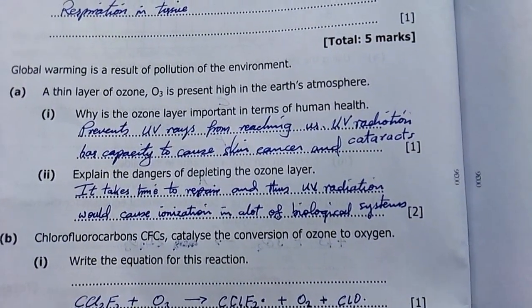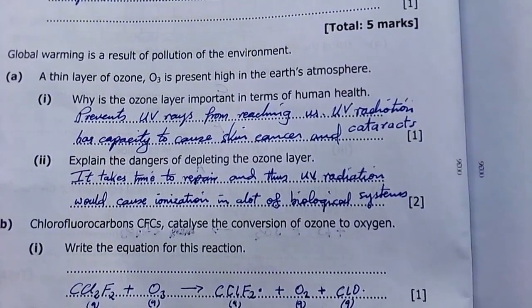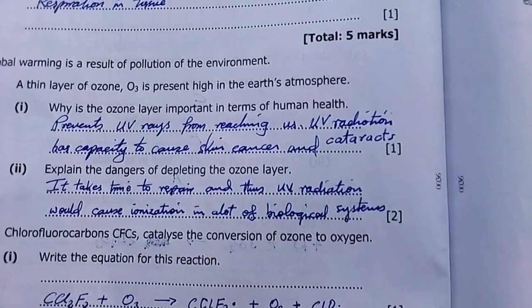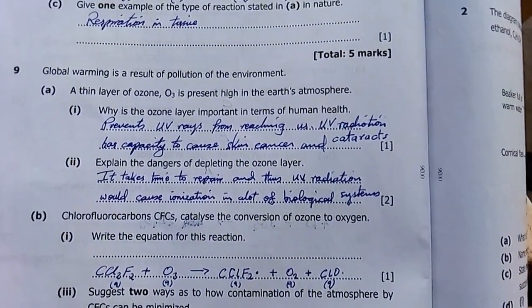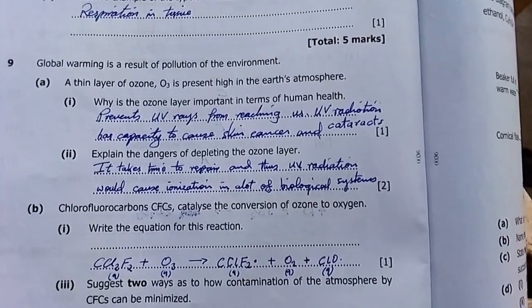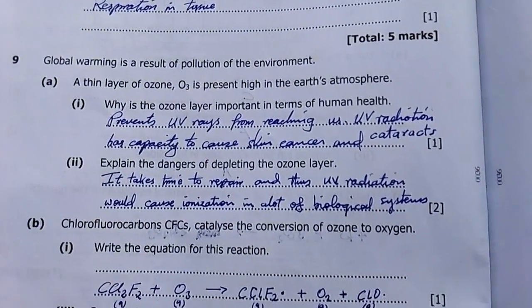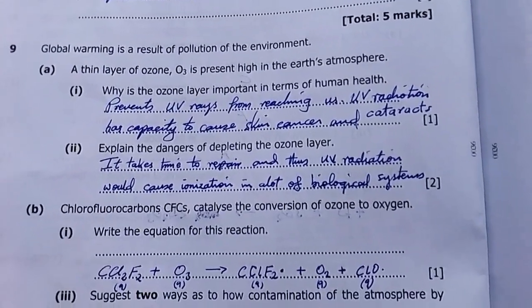Explain the dangers of depleting ozone layer. It takes time to repair, and thus UV radiation would cause ionization in a lot of biological systems or mutations. Once you deplete it, it takes time to rebuild itself. That's a danger, because it will mean the effects of UV will take course over a long period of time and will have effects.